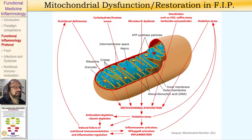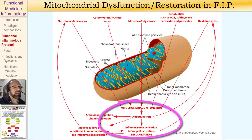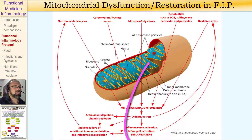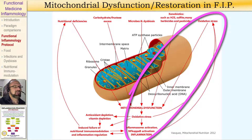Also, that oxidative stress increases the activity of the pro-inflammatory gene activator, or transcription factor, NF-kappa-B, and that leads back to more oxidative stress to create another pro-inflammatory and free radical-mediated vicious cycle, as you can see here.